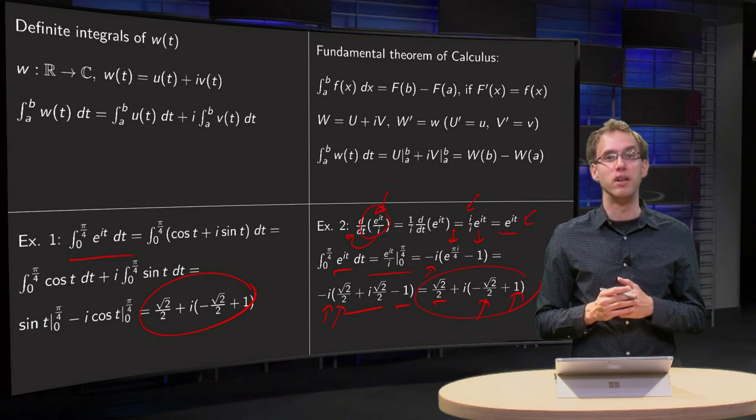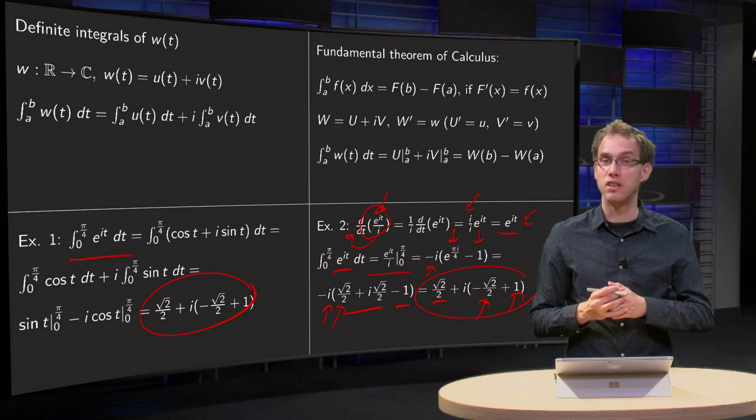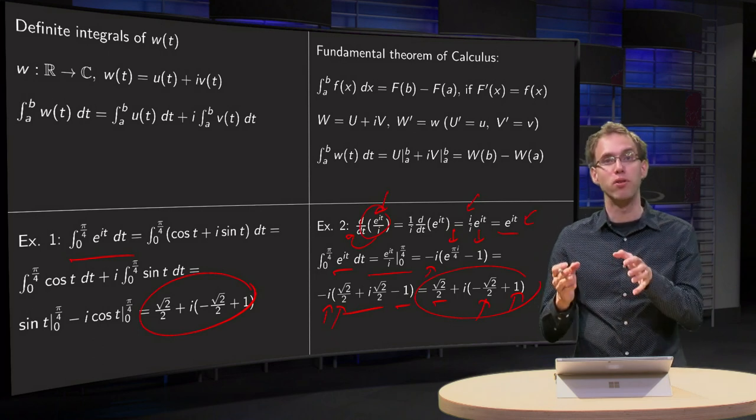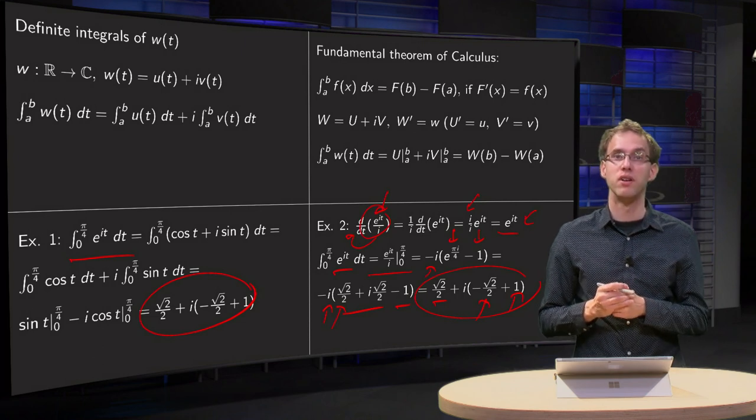So if you want to integrate a complex function, you can either split in u and v and integrate separately, or if you are able to find an antiderivative capital W of your small w, you can use this antiderivative instead.